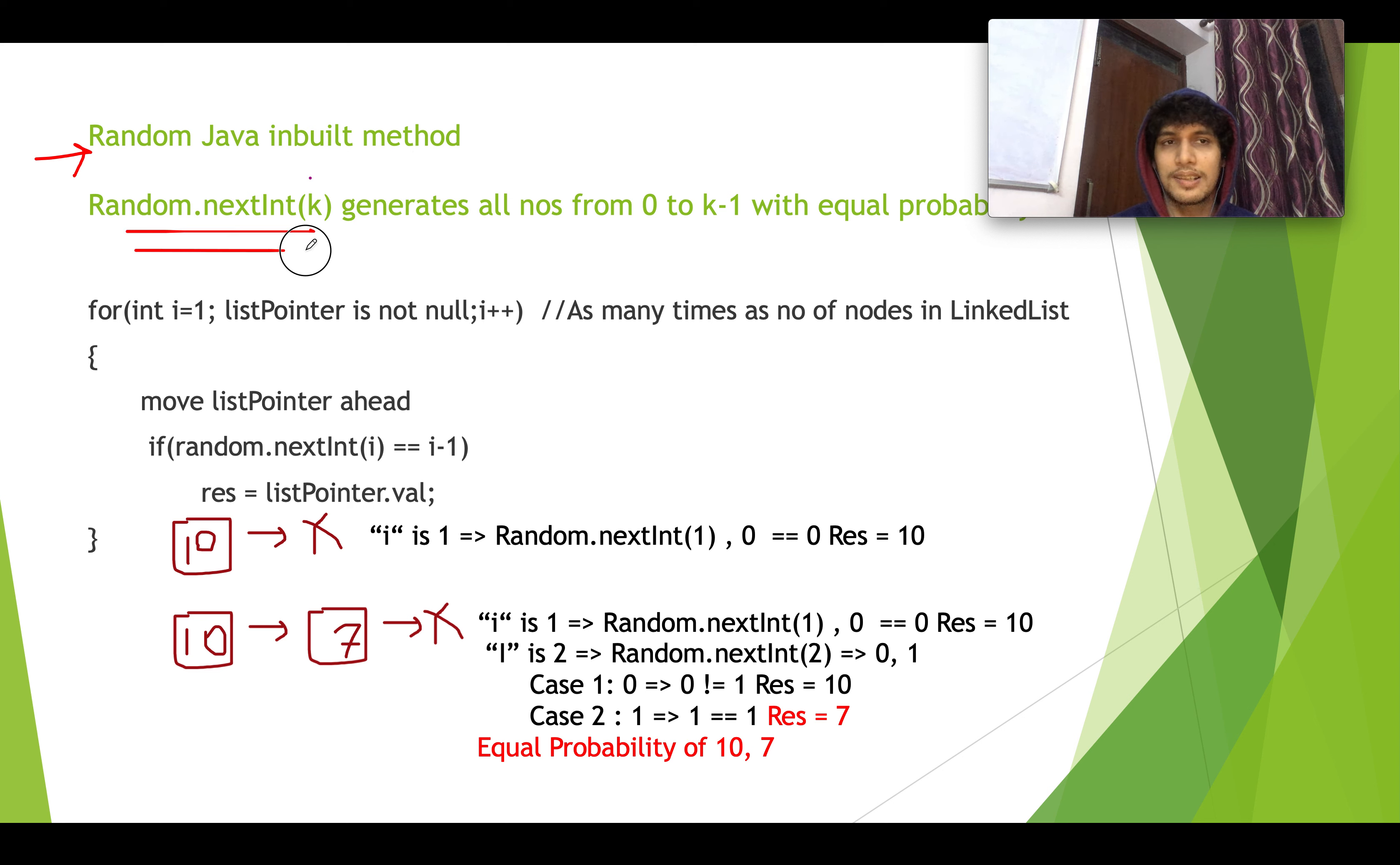Before that, let me tell you there is a random Java inbuilt method, a public method that is exposed by the Random class that generates next integer. It generates all the numbers from 0 to k-1 where k is an upper limit. k is not included in it, it's from 0 to k-1. Let's iterate through the algorithm. For i equals to 1, till the time list pointer is not null, you keep on incrementing i. That means it will move as many number of times as there are nodes in that linked list. So what I have done: move the linked list side, that is a generic statement for iteration. If random.nextInt of i is equal to i-1, I am resetting the result to the linked pointer value.